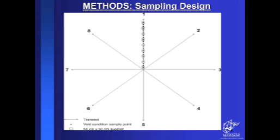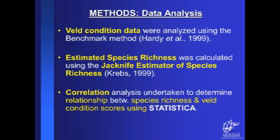For data analysis, veld condition data were analyzed using the benchmark method as described by Hadi et al. The estimated species richness was calculated using the jackknife estimate of species richness described by Krebs. Correlation analysis was undertaken to determine the relationship between species richness and veld condition using statistical software and Excel.